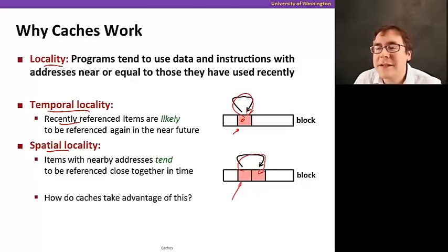So how do caches take advantage of temporal locality? Well, just by storing recently accessed data, you take advantage of temporal locality. But now, how do caches take advantage of spatial locality? They take advantage of spatial locality by bringing entire blocks of data from memory as opposed to a single byte at a time.